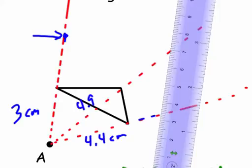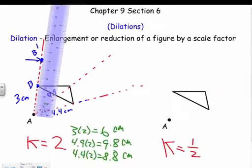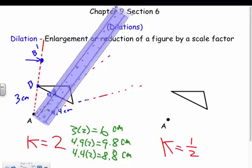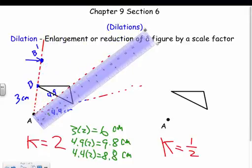That would be my new dilated point. For example, if this is called B, this would be B prime. Now you're going to do that for each point, so now I'm measuring—well, twice this distance is 9.8, which is right there.